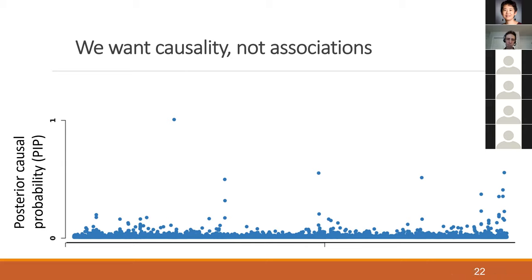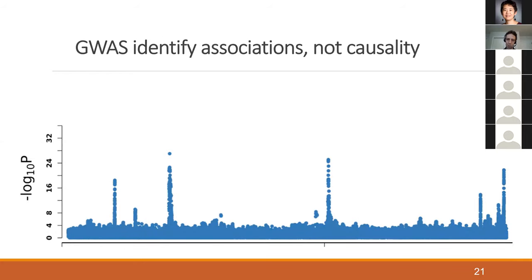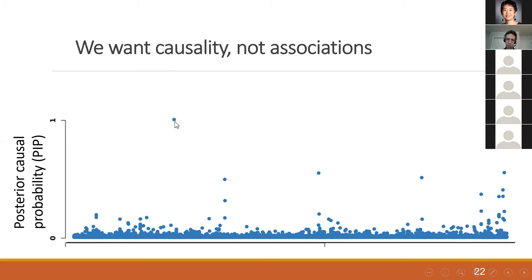What we want to get is a figure where on the y-axis we don't have the p-value but what we call a posterior causal probability. I'll also use the term PIP — posterior inclusion probability. It's a probabilistic measure between zero and one asking how likely a SNP is to be causal. As we move from the Manhattan plot to this representation, the signals become much sparser: only one or a few SNPs survive, and hopefully these are the causal SNPs that drove the signal in the locus.